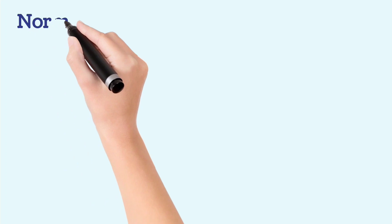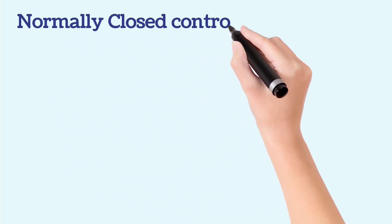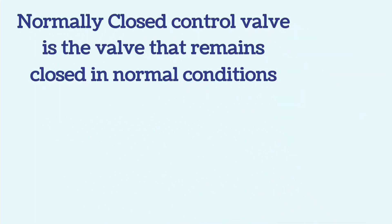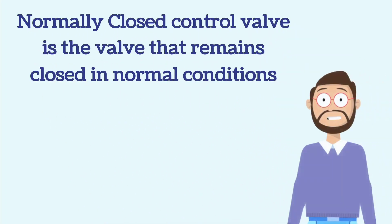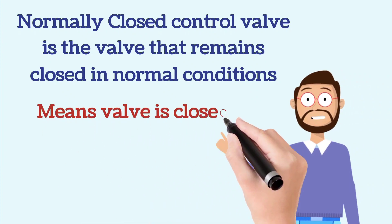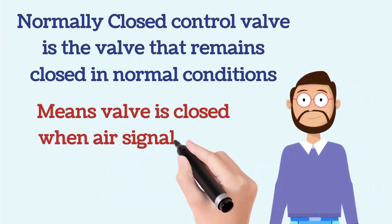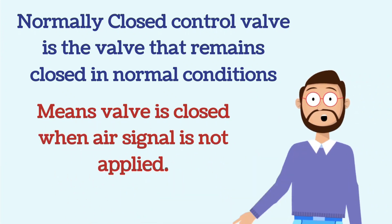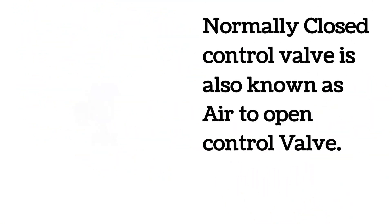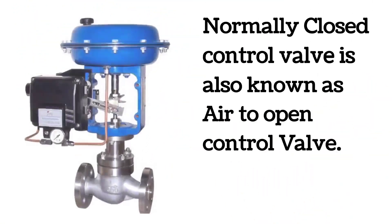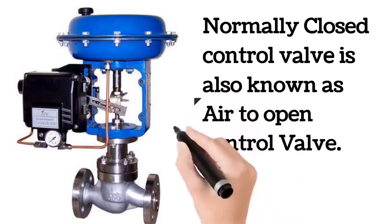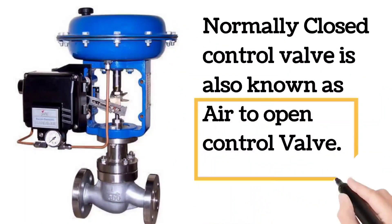A normally closed control valve is one that is closed in normal condition. This means the valves that remain closed when the air signal is not applied. A normally closed control valve is also called an air-to-open control valve.